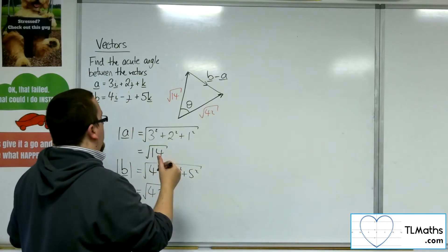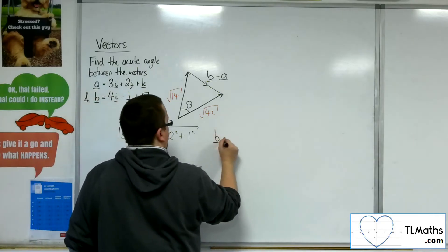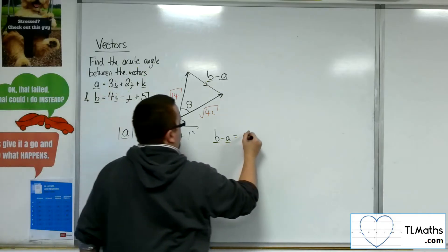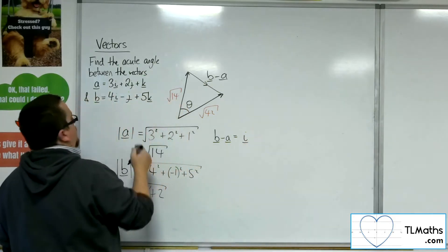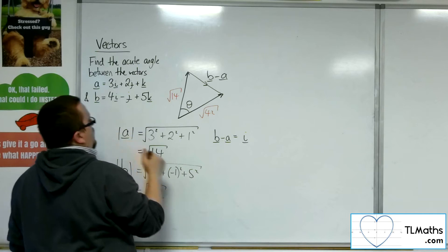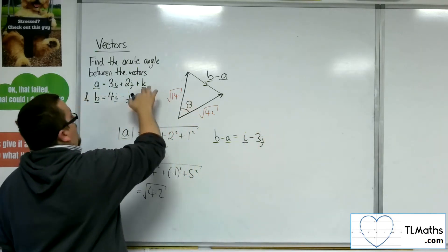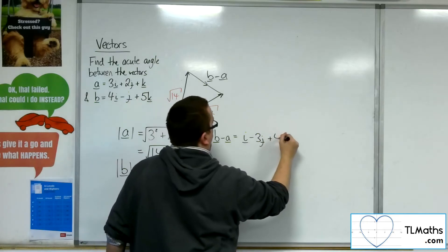So now if I work out B minus A, so 4 take away 3 is 1, so 1i, minus 1j take away 2j is minus 3j. And then 5k take away k is 4k.